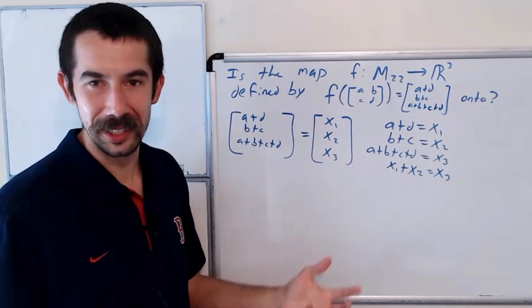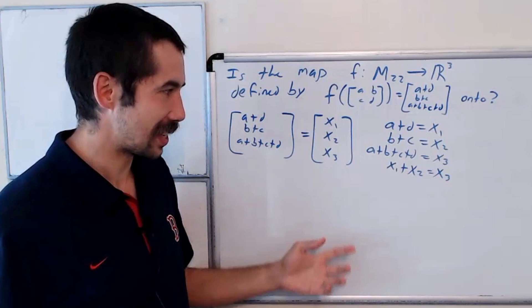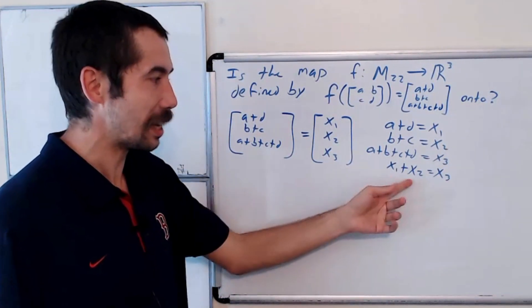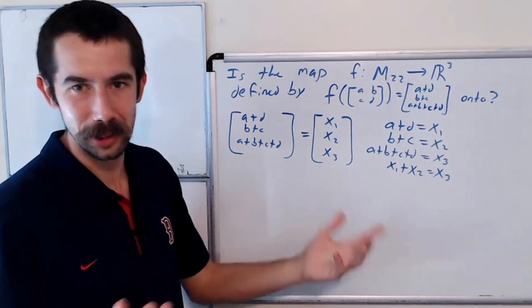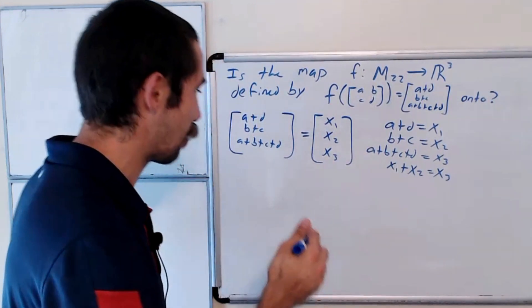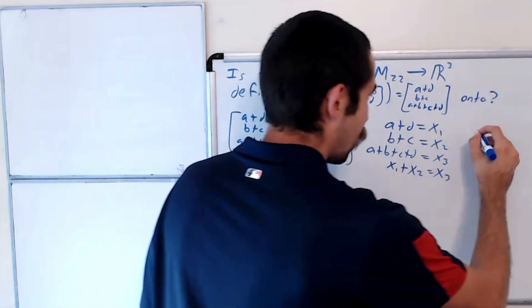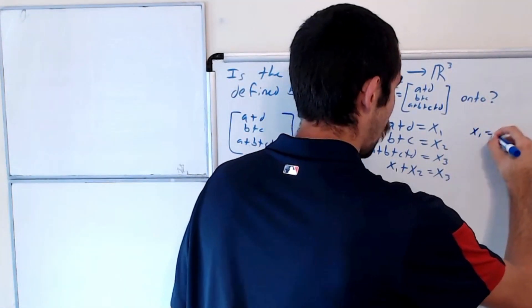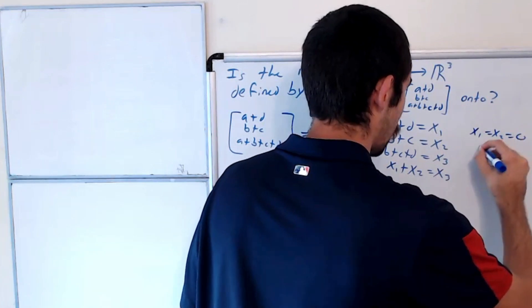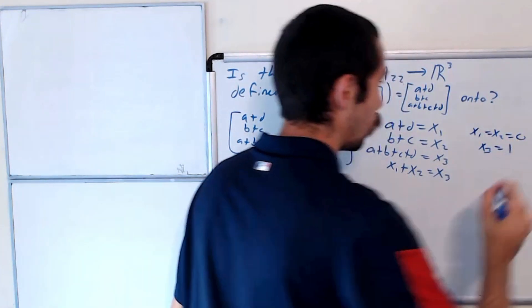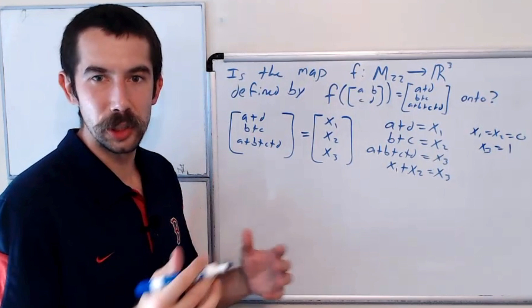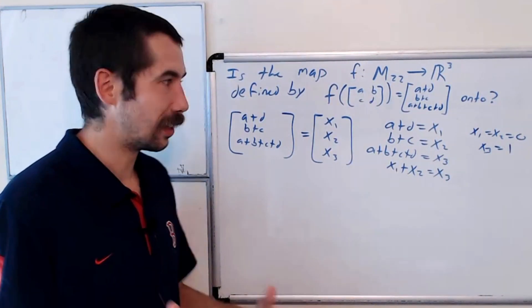So the question is, can we find a vector? Is there a vector that exists such that the third entry is not equal to the sum of the first two? Well sure, there's literally infinity many of them. So let's take X1 equals X2 equals 0, and we'll take X3 equal 1, and let's show that this is not in the range.